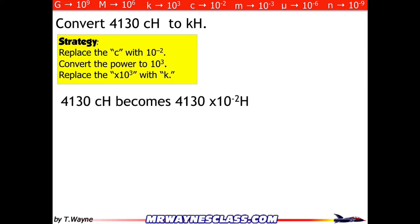So I'll start with 4,130 centihenrys becomes 4,130, and I replace the C with a 10 to the negative 2, so times 10 to the negative 2 henrys.